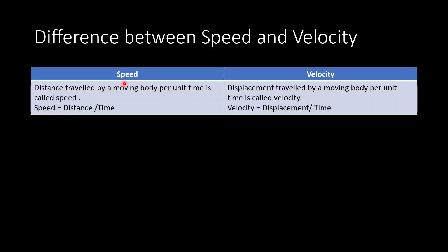Number one is the definition of speed and the definition of velocity. Speed is defined as the distance travelled by a moving body per unit time, or we can simply write it as speed is equal to distance upon time. Velocity is defined as the displacement travelled by a moving body per unit time, or we can simply write it as velocity is equal to displacement upon time.